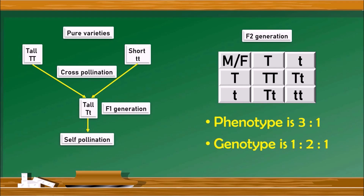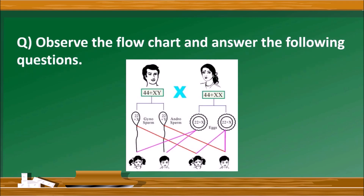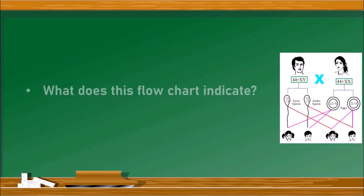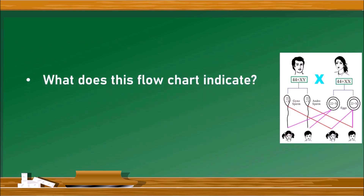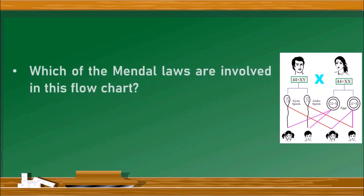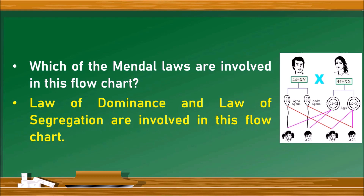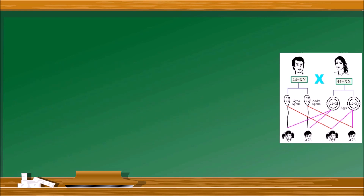Question 2: observe the flow chart and answer the following questions. This flow chart indicates sex determination in human beings. The next question asks which Mendel laws are involved — two Mendel laws are involved: the law of segregation and the law of dominance.